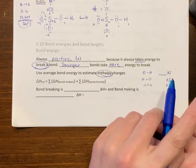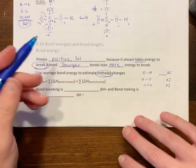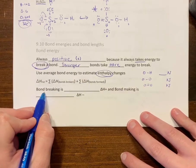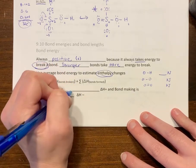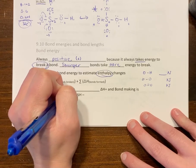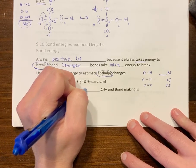Bond breaking is endothermic because it's positive. It takes energy to break the bond.